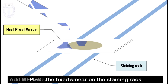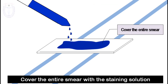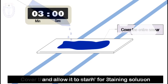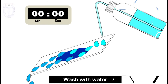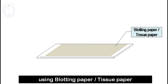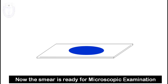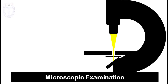Add methylene blue staining solution over the smear, covering the entire smear with the staining solution, and allow it to stand for three to four minutes. After three to four minutes, wash it with distilled water. After washing, blot dry the smear with blotting paper or tissue paper. Now the smear is ready for microscopic examination.